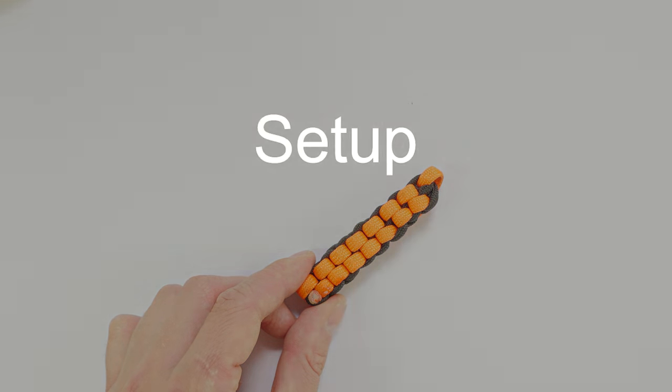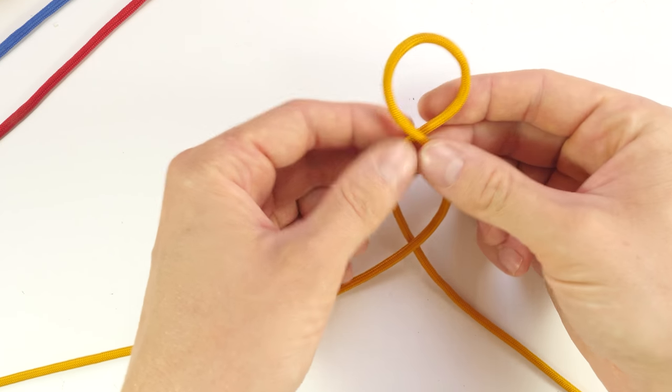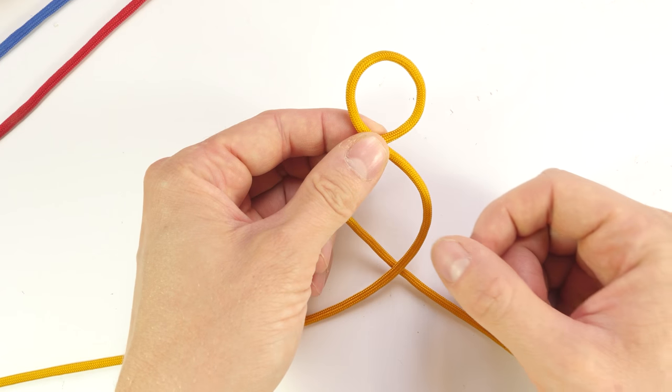So let's get started. To tie the double box knot, I'm going to use three pieces of cord. I'm going to take the first piece and form a loop at the middle of my cord.